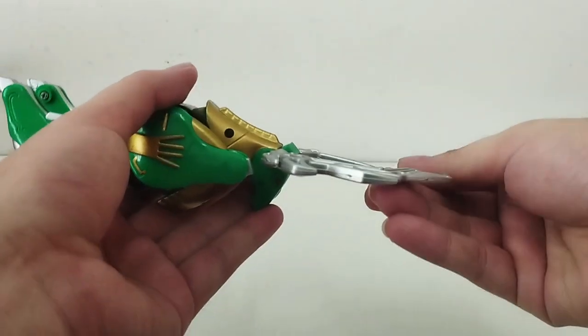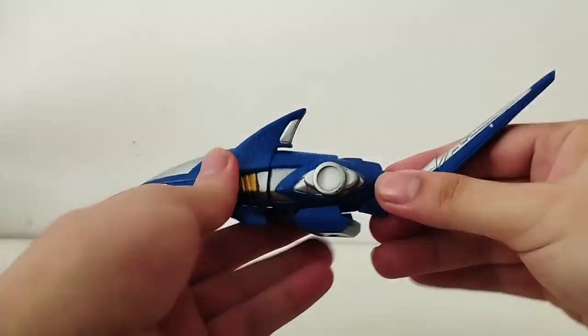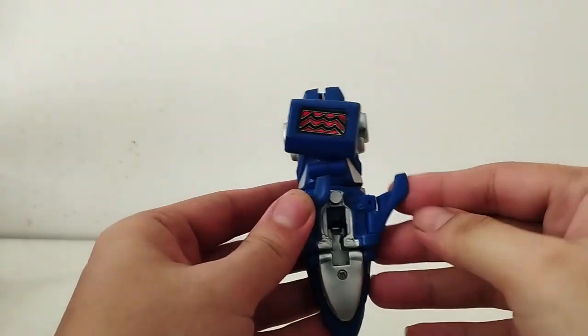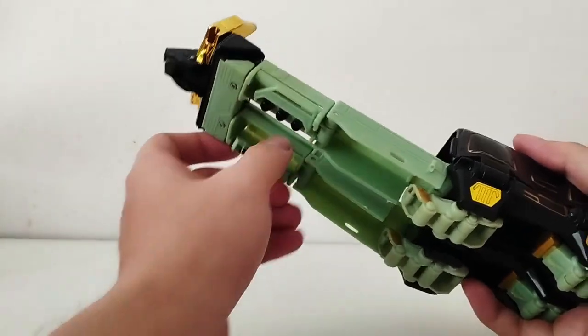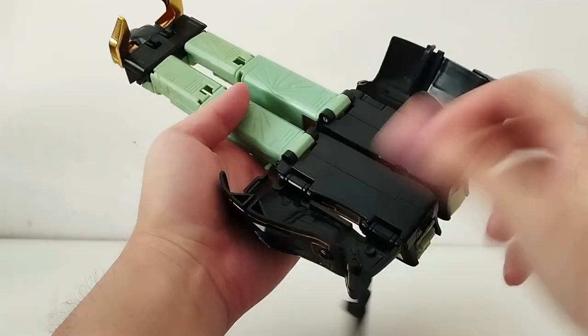Nhưng may mắn thay, một siêu thú mới xuất hiện đã kịp khắc chế tên quỷ này. Sau đó Gao Bạc đã tiết lộ rằng đó chính là Gao Nai Dias, vừa có khả năng trị bệnh cho các siêu thú Gao, vừa có thể làm bất động Oruku trong một thời gian.